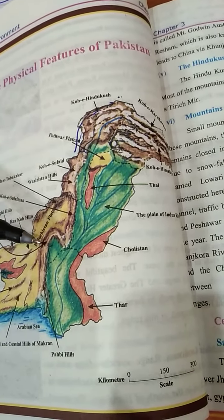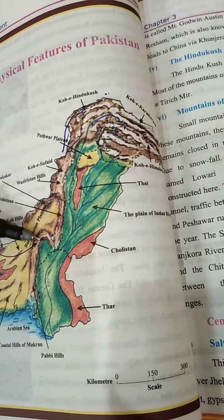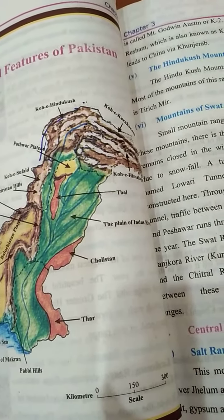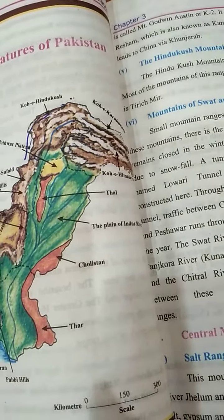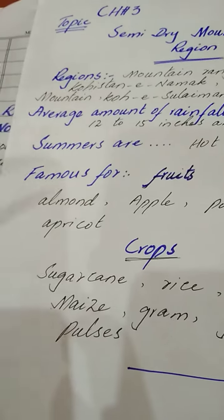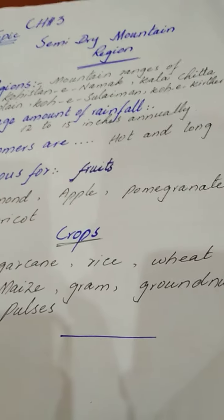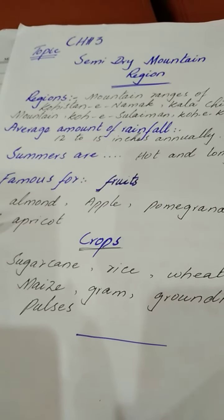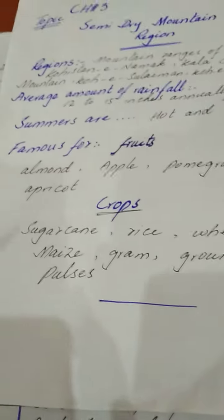In these areas, summers are hot and long. These areas are famous for fruits like almond, apple, pomegranate, and apricot. These are the famous fruits of this region.